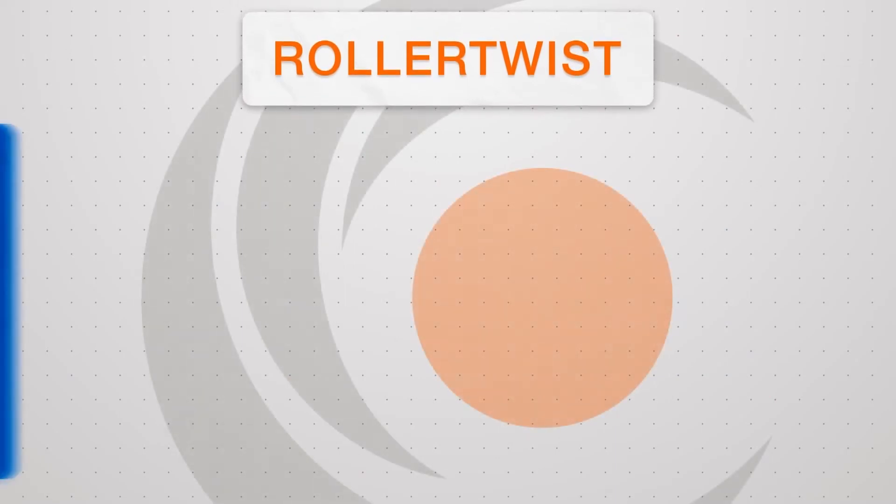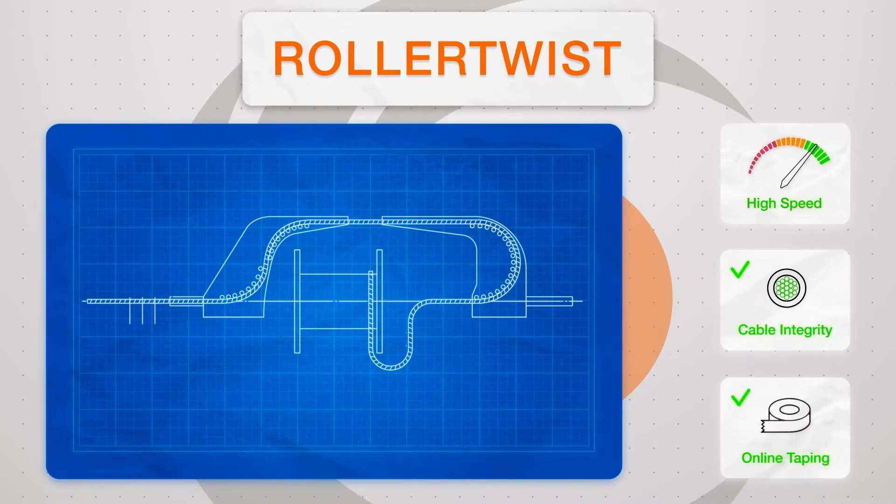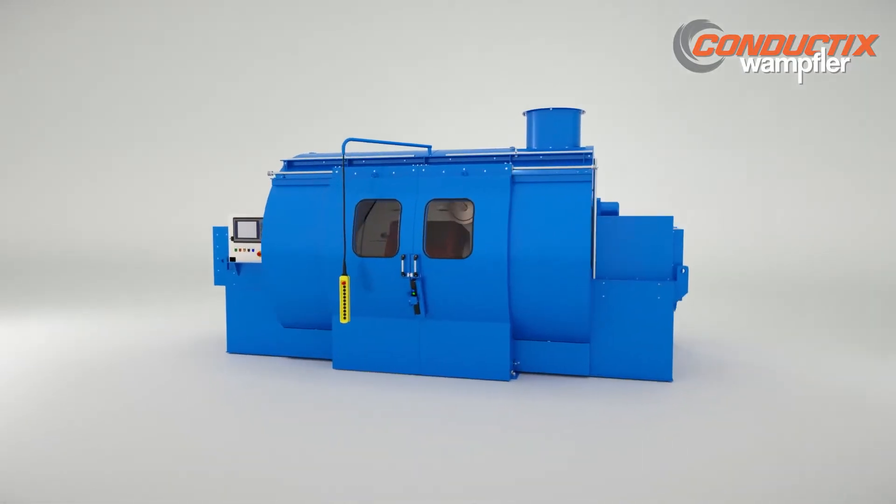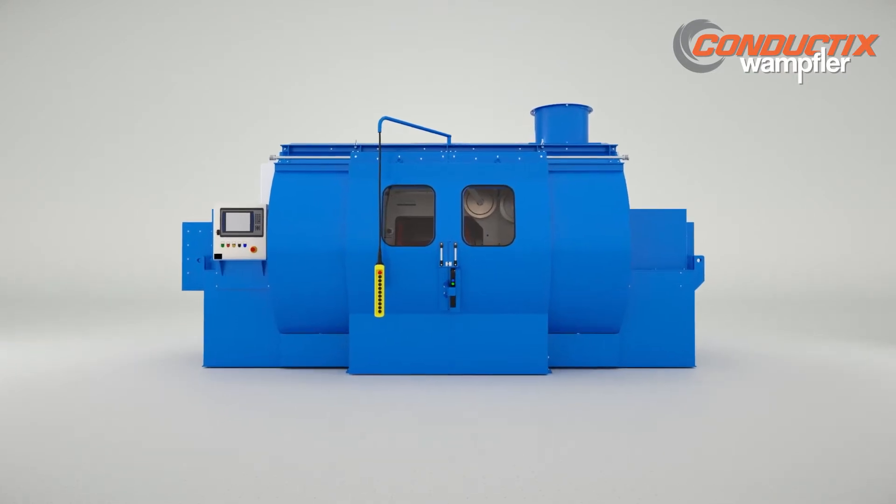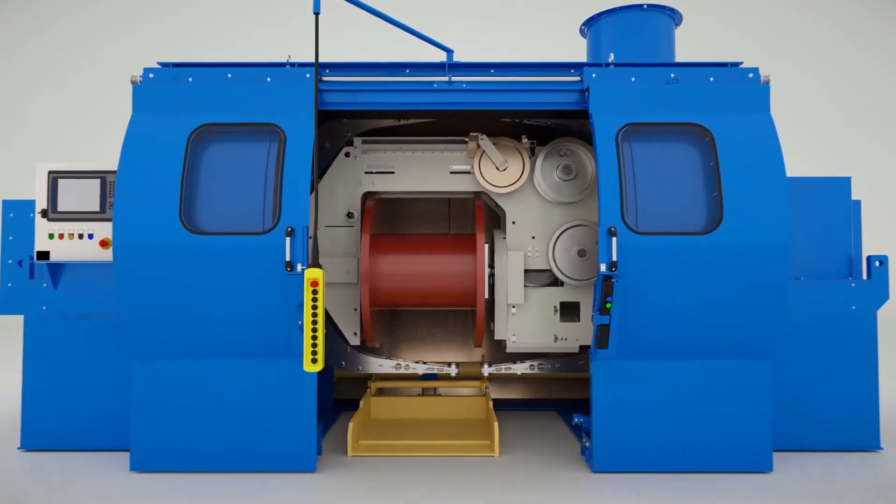The roller twist range from Conductix Wampler achieves the best compromise between both technologies. The roller twist combines the smooth, regular and harmless single twist stranding quality with the intrinsic high speed of a double twist strander.